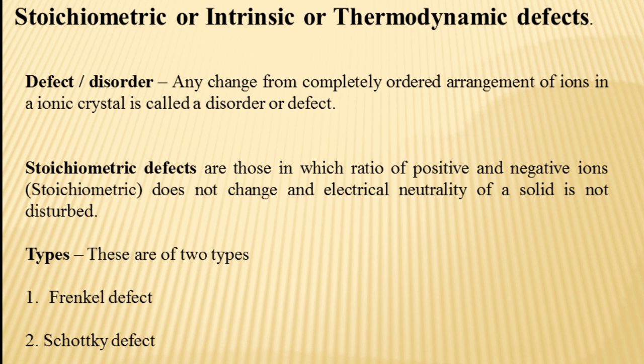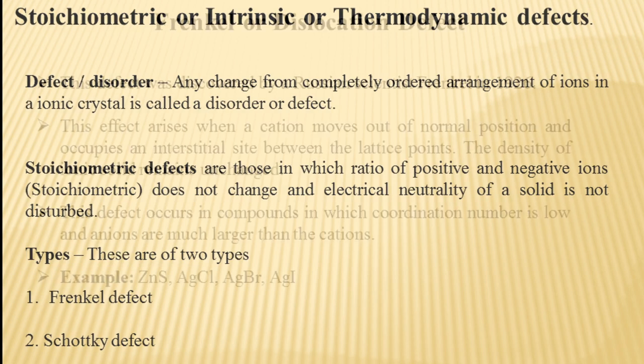Also, the solid remains electrically neutral, meaning the number of positive and negative charges are equal. These stoichiometric defects are of two types: Frenkel defect and Schottky defect.